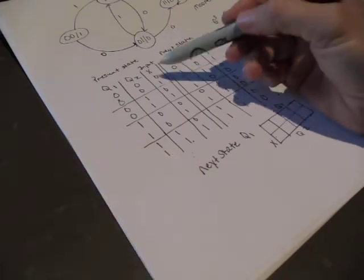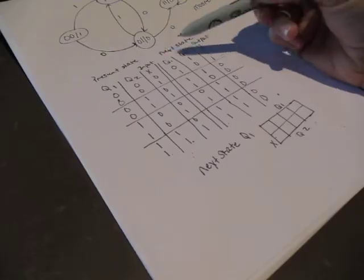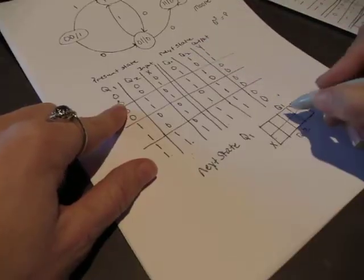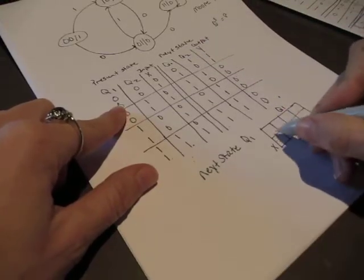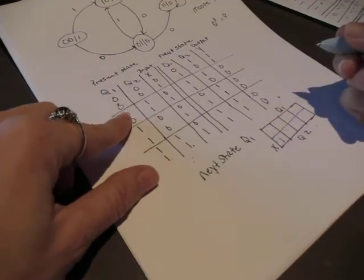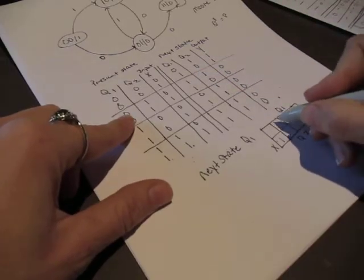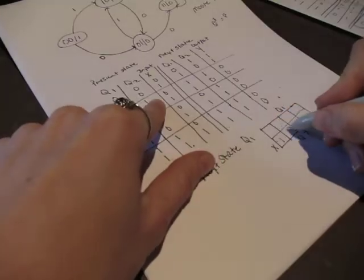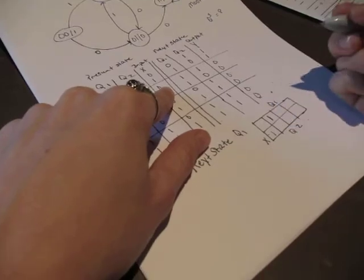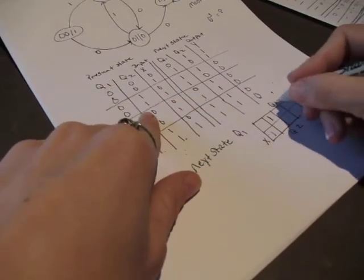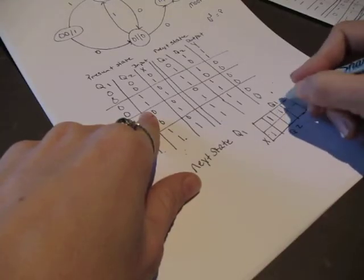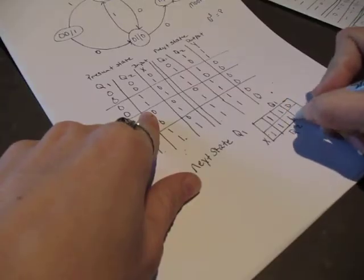I'm going to look down and find where Q1 equals 1. Here's our first one — it's not in Q1, not in Q2, but it is in X, so we place a 1 here. The next one is in Q1, in Q2, but not in X — so it goes here. I'll fill the rest out: the values are 1, 0, 1, 1, 1.